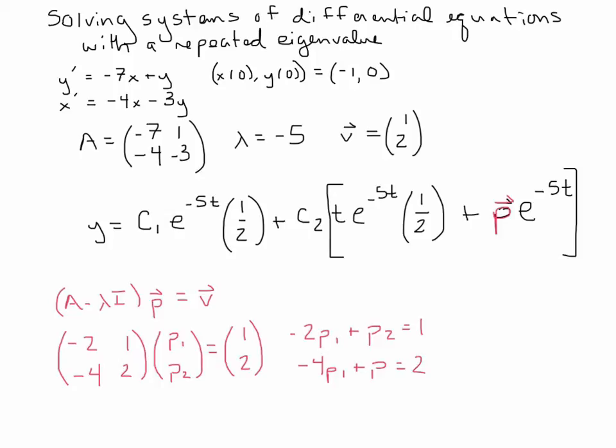So this leaves me with a system of equations here, where I'm going to get negative 2p1 plus p2 equals 1. It's negative 2 times p1 and then 1 times p2, the row times the column. And then we need to do this next row times the next column. So that would be negative 4p1 plus 2p2, and that would equal that bottom component, which would be 2. I think I just forgot something. I forgot that 2 right there.